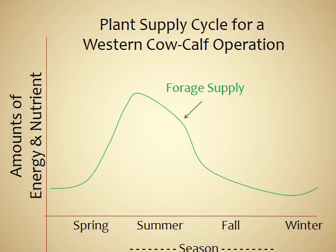Now I'm going to highlight the plant supply cycle for a western cow-calf operation. On the y-axis is the amount of energy and nutrients available in the forage supply, and on the x-axis is the season. Rapid spring growth begins with the onset of warm spring temperatures, longer days, and higher light intensities, and peak forage production occurs at the end of rapid spring growth. Forage supply decreases as temperatures get hotter during summer and continues into fall and winter. Sometimes there is also a winter growth period that begins after fall growth slows due to cooling temperatures, shorter days, and lower light levels.